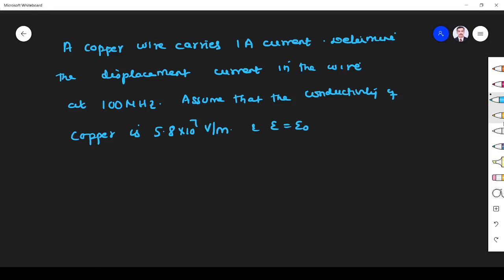Hi students, welcome to the problem solving session on displacement current. A copper wire carries a current of 1 ampere. So I = 1A. Determine the displacement current. What I want is Id, displacement current in the wire.